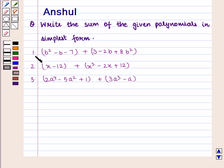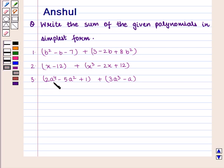The first part is (b² - b - 7) + (3 - 2b + 8b²). Second, (x - 12) + (x³ - 2x + 12). And the third part is 2(a⁴ - 5a² + 1) + (3a³ - a).